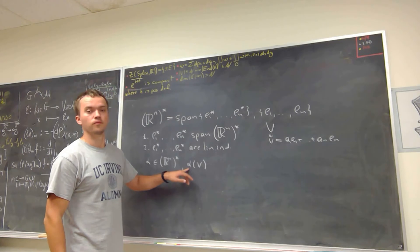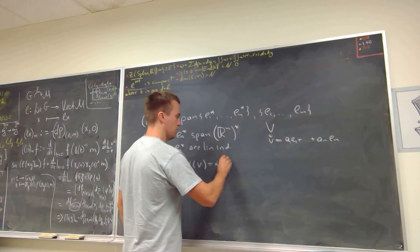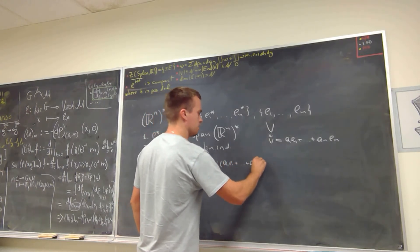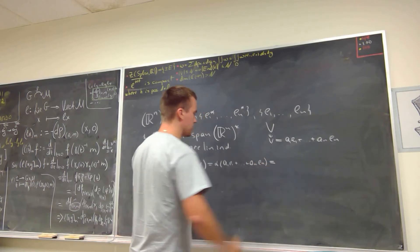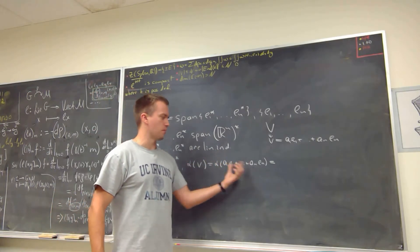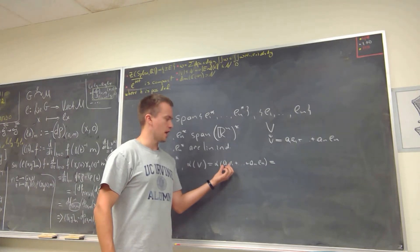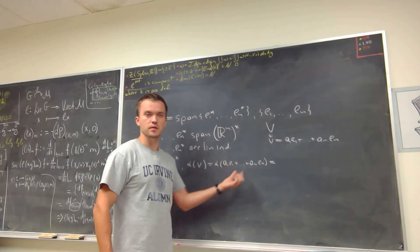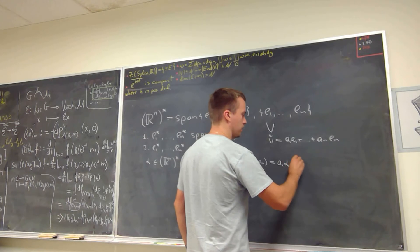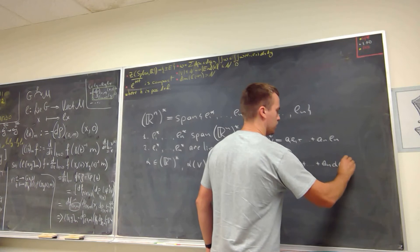When we apply the linear functional α to v, we get α(a1·e1 + ... + an·en). Since α is a linear map, we can split this as a sum of α(ai·ei), and since each ai is a constant we can factor it out — giving us a1·α(e1) plus ... plus an·α(en).